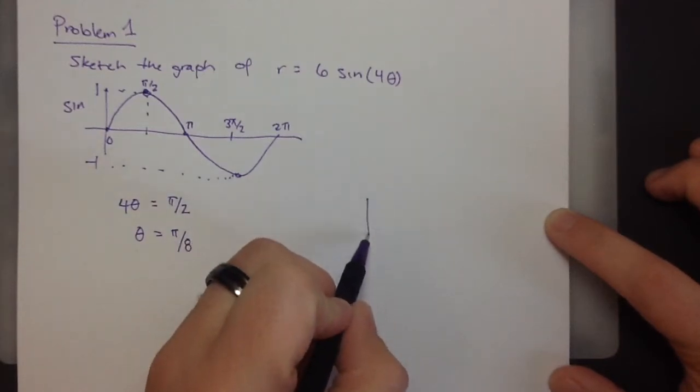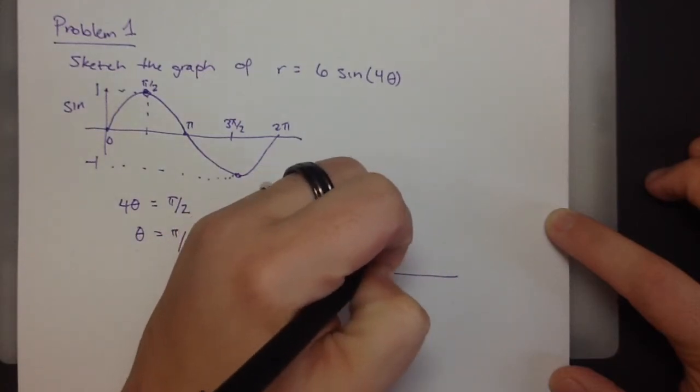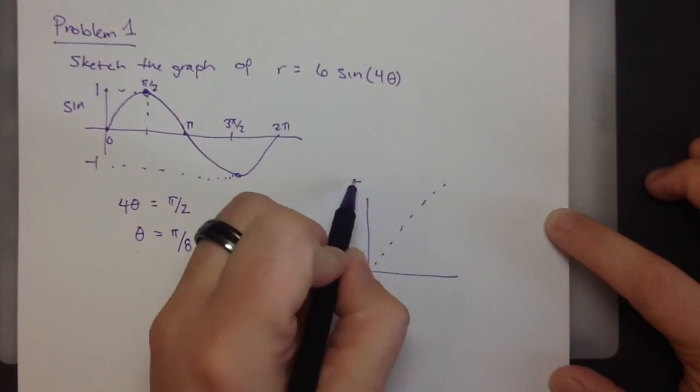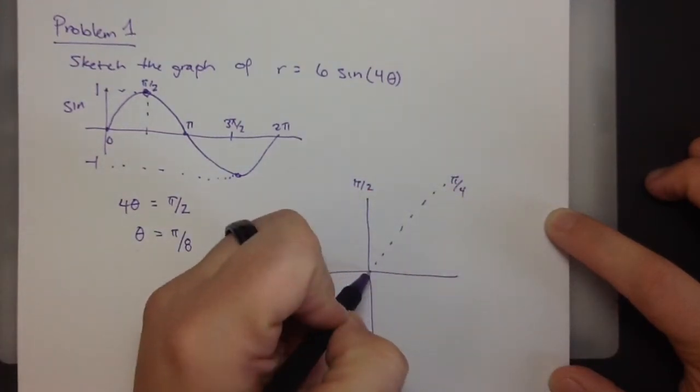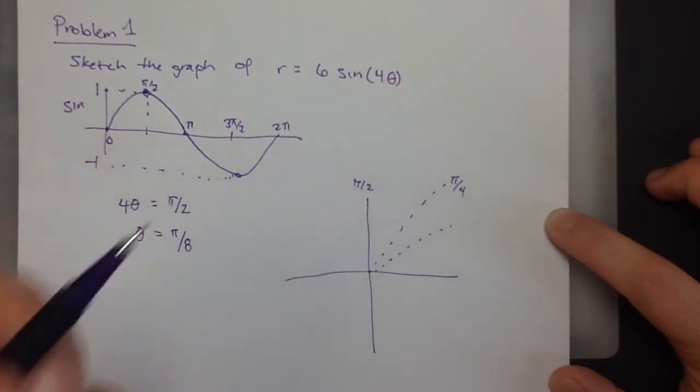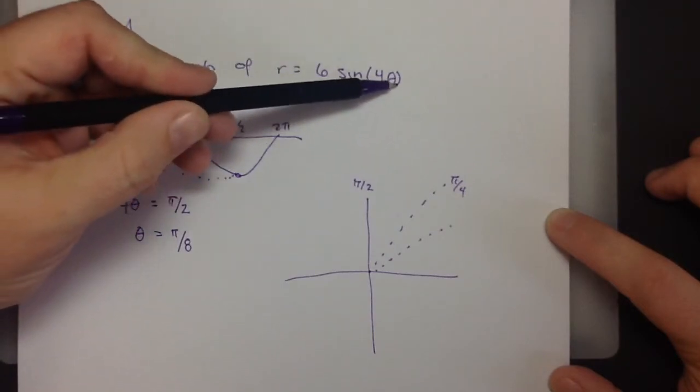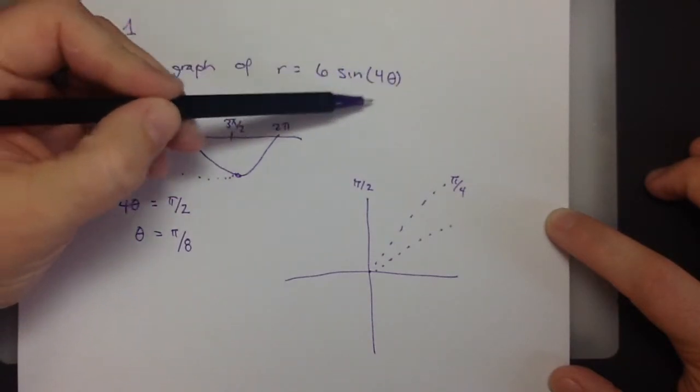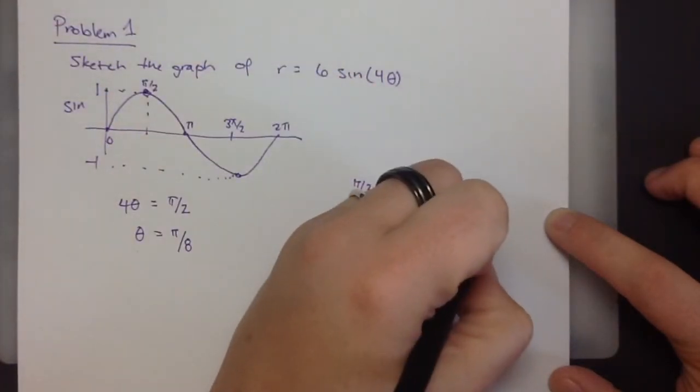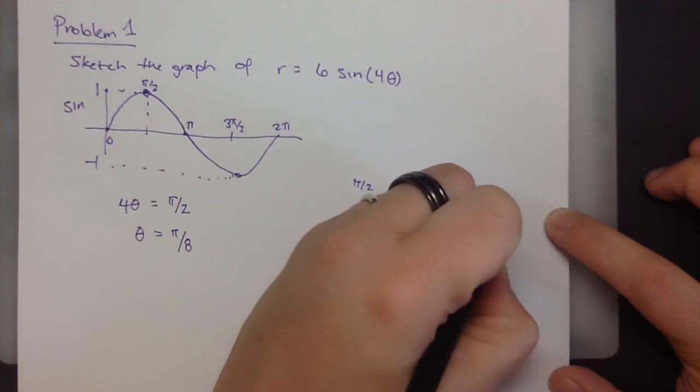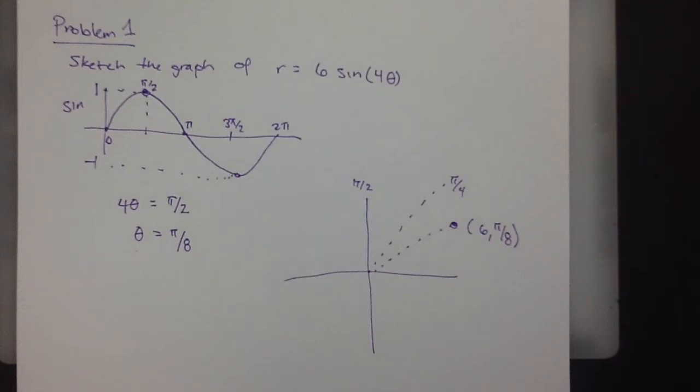So, if theta is pi over 8, we're going to get a positive 1. So, on our graph of polar coordinates, if this is pi over 2, and this is pi over 4. So, if theta is pi over 8, then we get a value of sine of 4 theta is just 1, and r is 6. So, this is going to be here. 6, pi over 8. That's our first point.